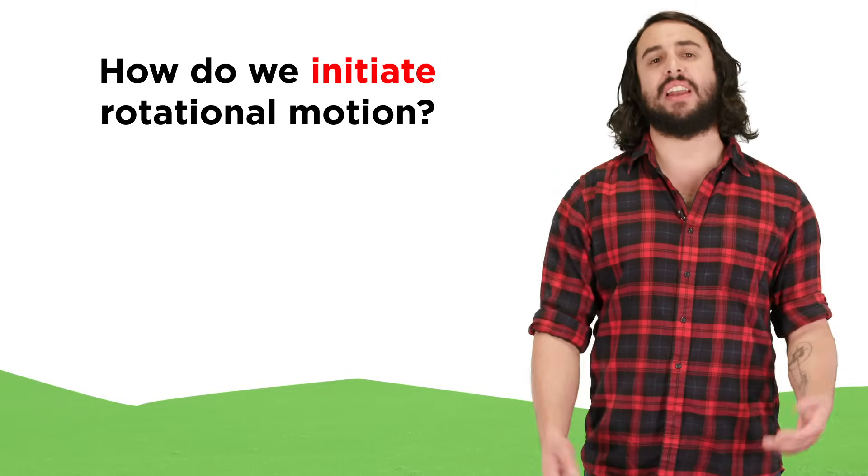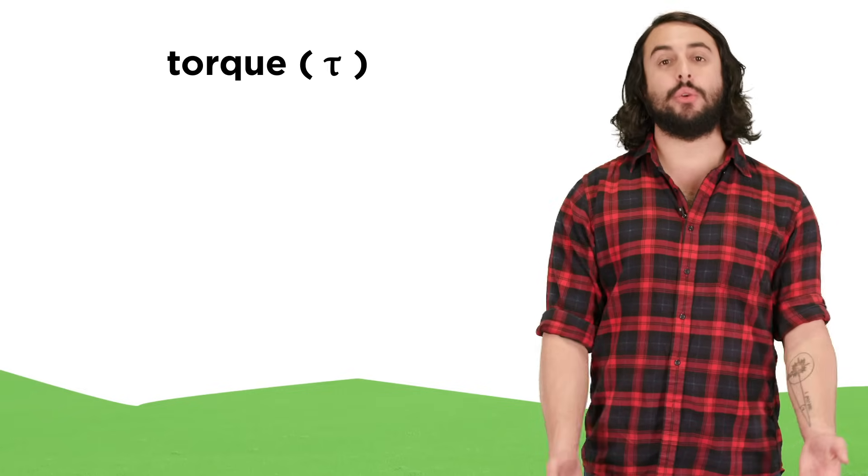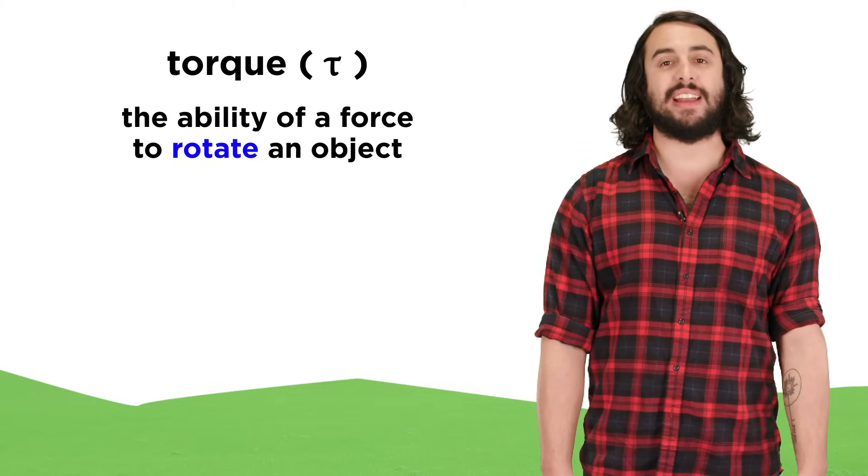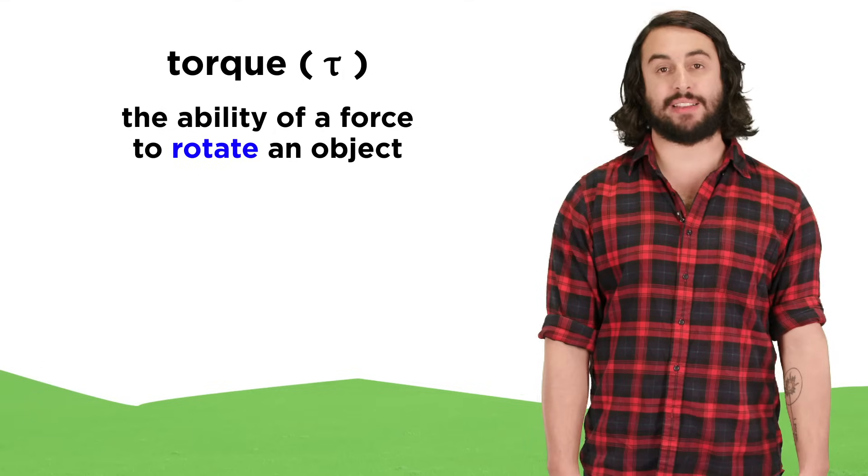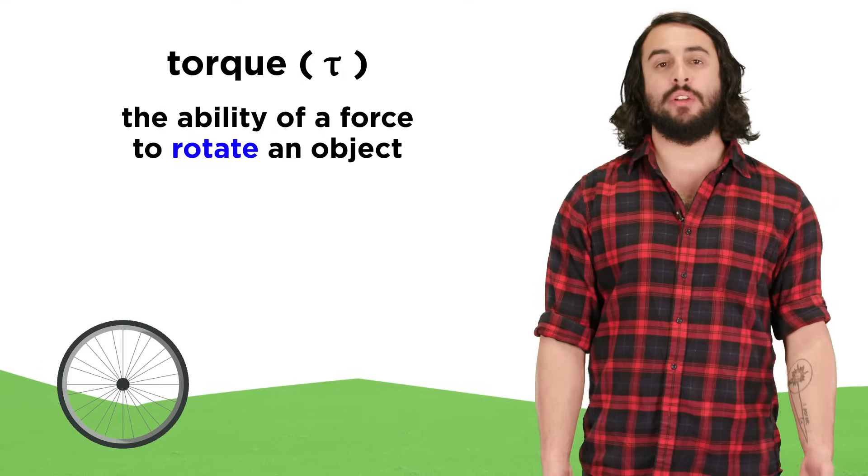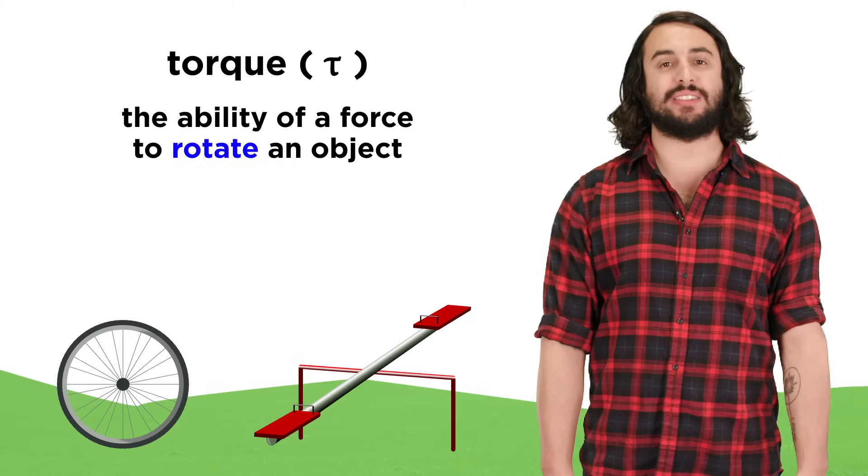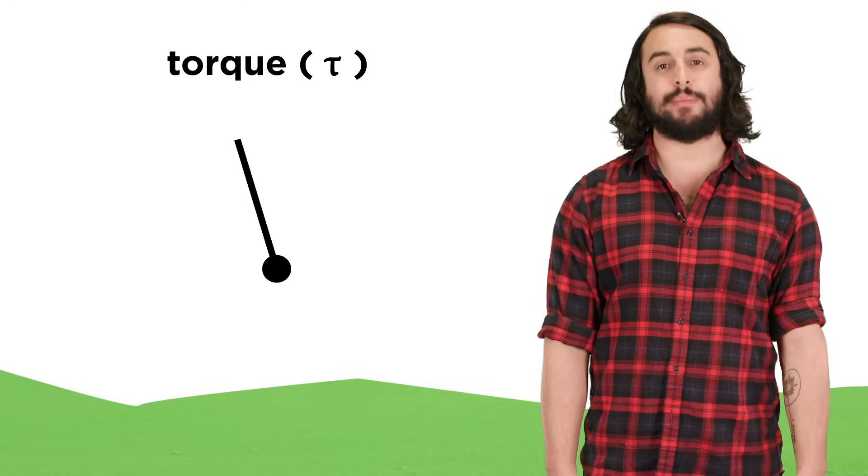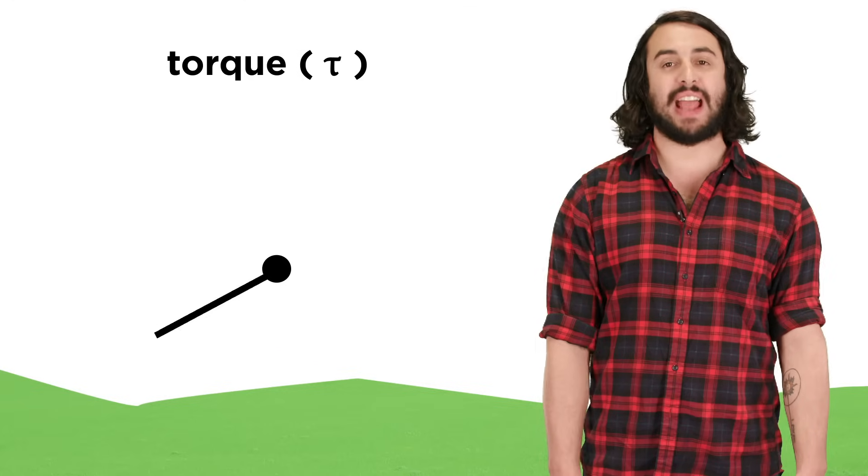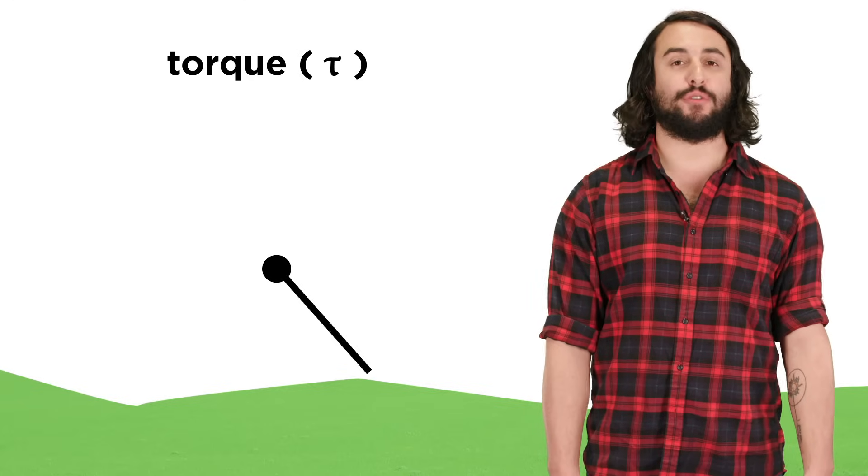How can we set a system into rotational motion? We can do this by generating something called a torque. Torque is defined as the ability of a force to rotate an object around some axis, whether we are looking at a wheel, a seesaw, or anything else that exhibits this kind of motion, and for now we can just look at a top-down view of a panel attached to a rod, allowing for free rotation.